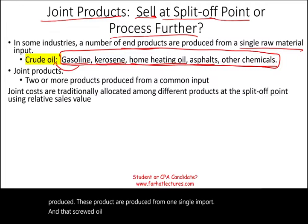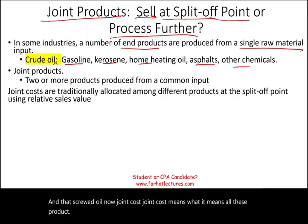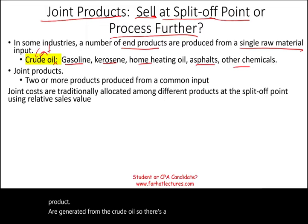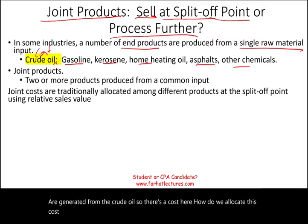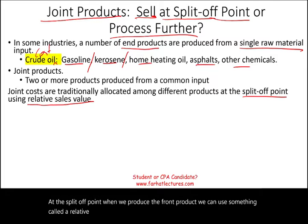Now, joint cost — what does joint cost mean? It means all these products are generated from the crude oil, so there's a cost here. How do we allocate this cost to the various products? At the split-off point when we produce the joint products, we can use something called relative sales value.